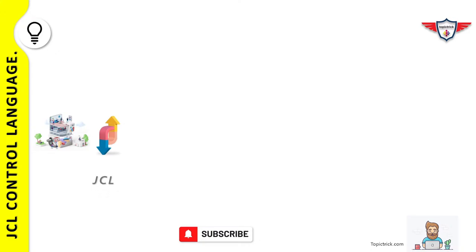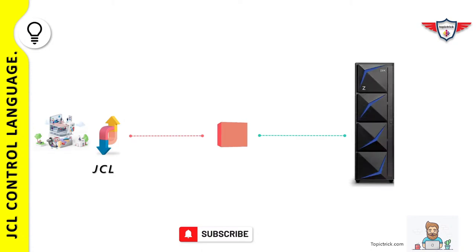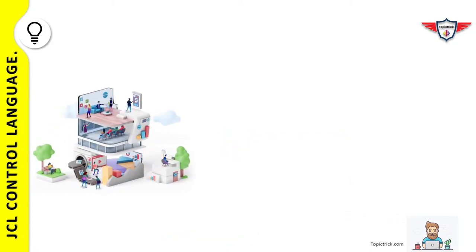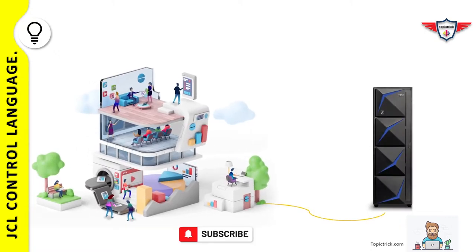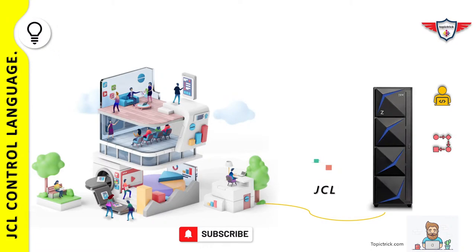The term JCL stands for job control language. It is one of the oldest scripting languages predominantly used on IBM mainframe. JCL is a language that tells IBM ZOS which resources are needed to process a batch job. As a technical professional in the world of mainframe computing, you should know what JCL is and how to write a JCL to accomplish your daily tasks.